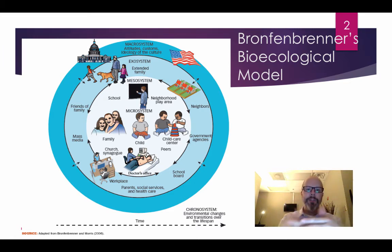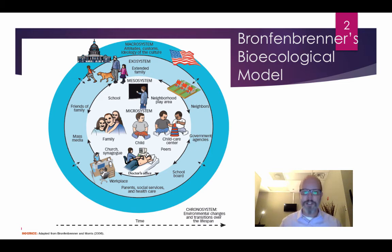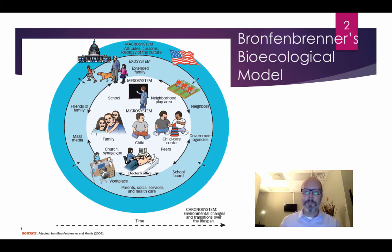Outside of the exosystem, we have the macrosystem, which includes the customs of the culture, ideology of the culture, and attitudes. There are macrosocietal messages embedded within systems, including stereotypes and prejudices. And finally, the chronosystem — an example would be historical eras, which influence all of these things in terms of people's behaviors and the influences of systems depending on the generation or era we find ourselves living in.